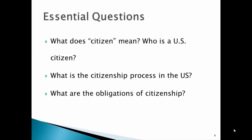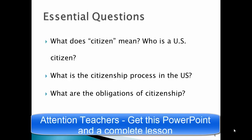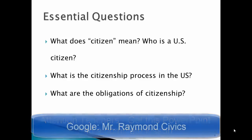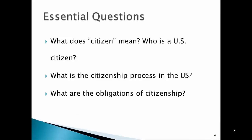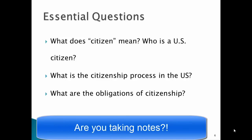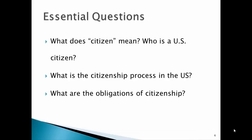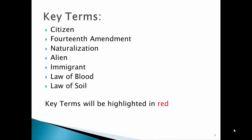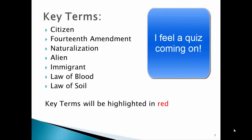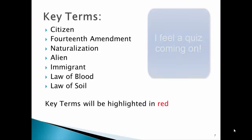Our essential questions — and I highly recommend writing this stuff down. What does citizen mean? Who is a U.S. citizen? What is the citizenship process in the U.S.? And the final essential question: what are the obligations of citizenship? We'll go over that in the next video. Your key terms, highlighted in red, are the words you absolutely need to know: citizen, 14th Amendment, naturalization, alien, immigrant, law of blood, and law of soil.